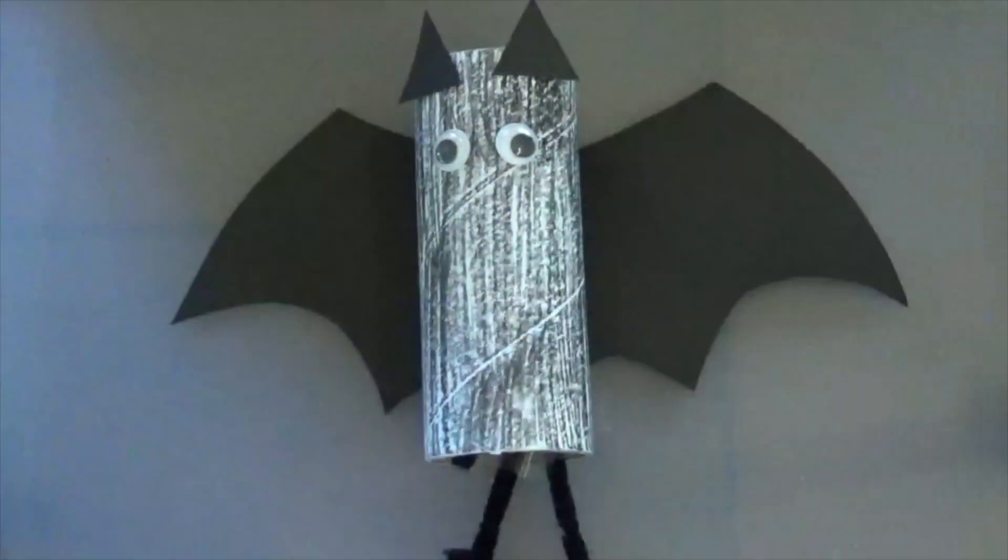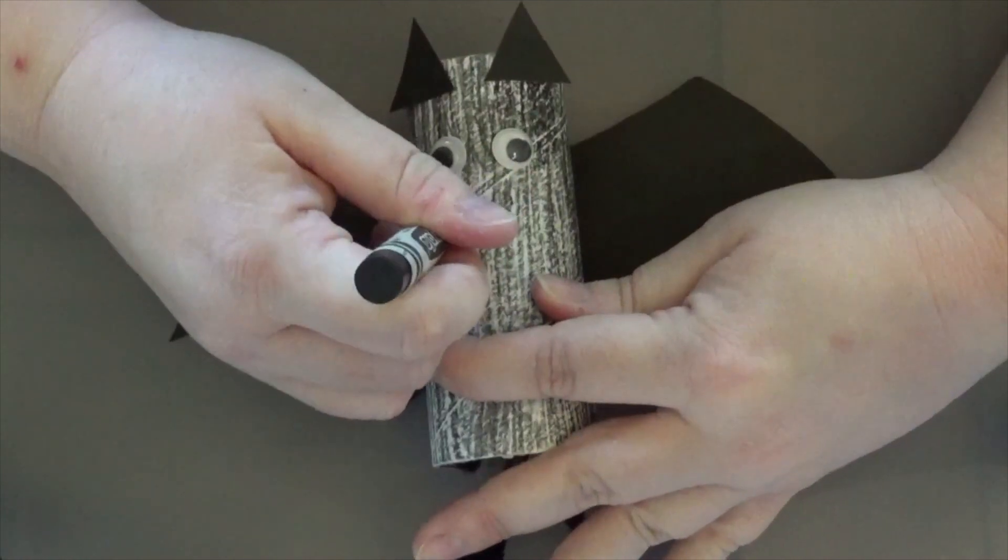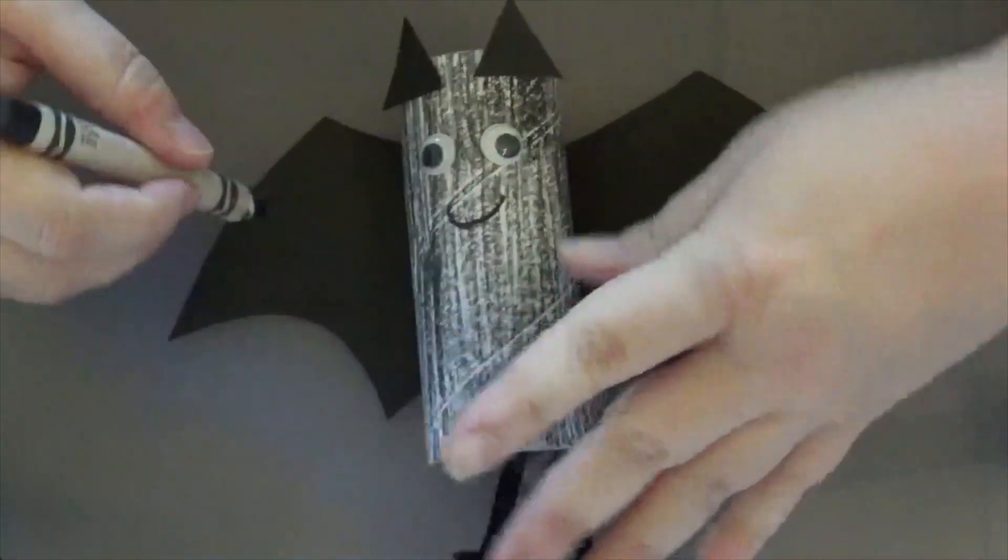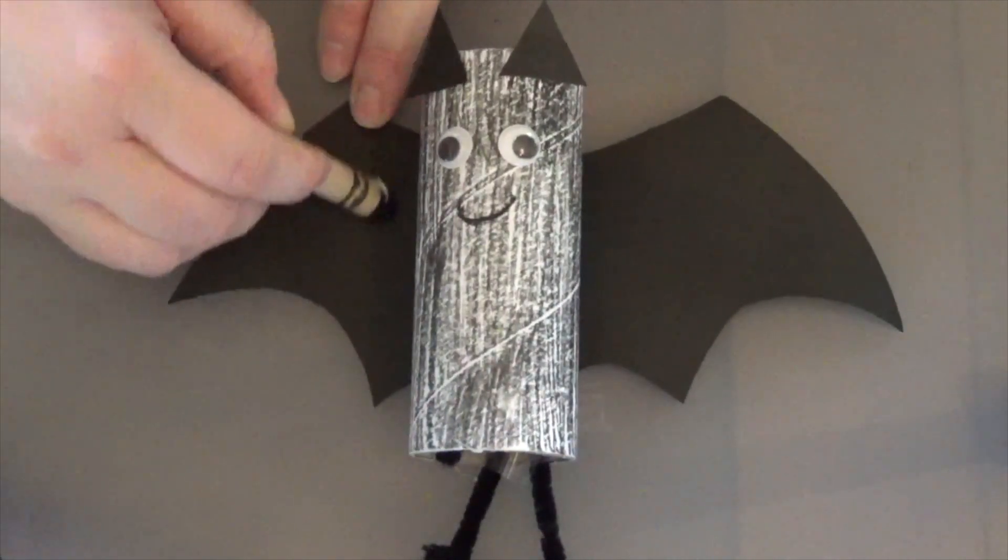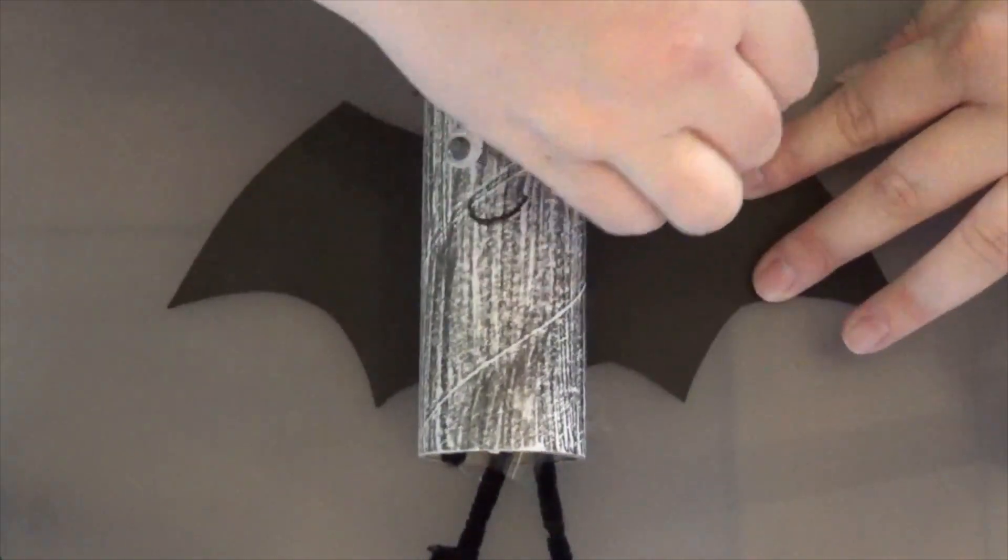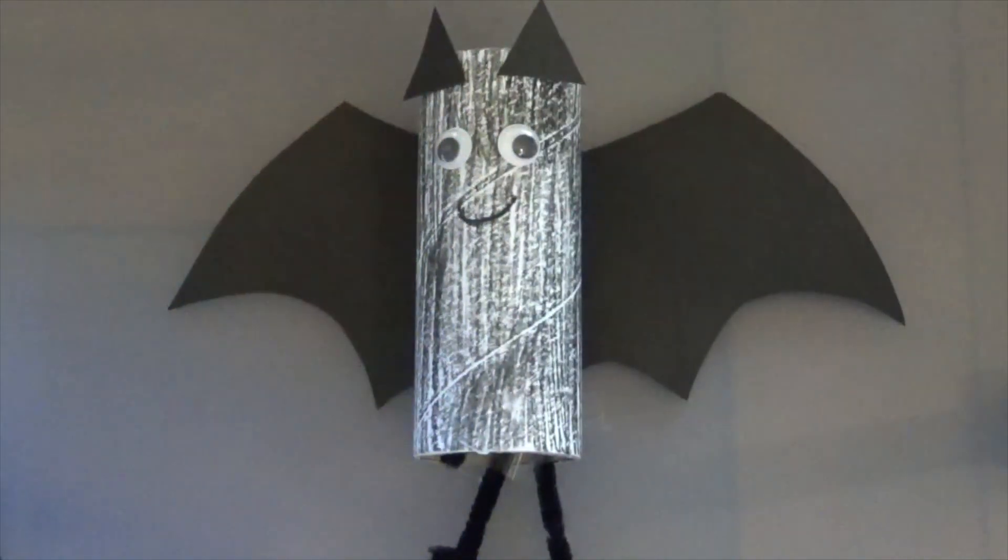Now, if you wanted to give him a little smile, you could always give him a little smile too. You could come in here with a white crayon if you wanted to. I don't have a white crayon on me right now, but you could come in here and draw his finger bones onto his wings.